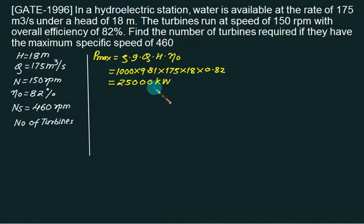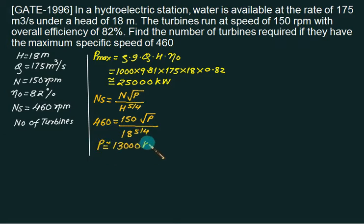Now using the specific speed formula, we can calculate the power developed for one turbine. So we have Ns equals N times square root of P divided by H to the power 5/4. Ns is given as 460, N equals 150, P we do not know, H equals 18 to the power 5/4. So power developed by one turbine will be 13,000 kilowatts.